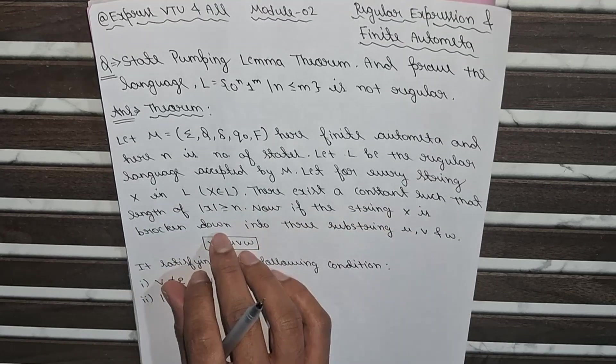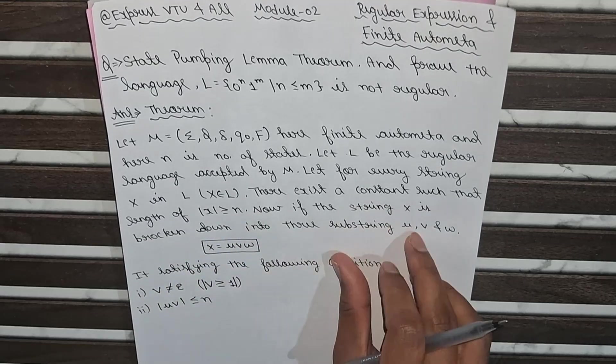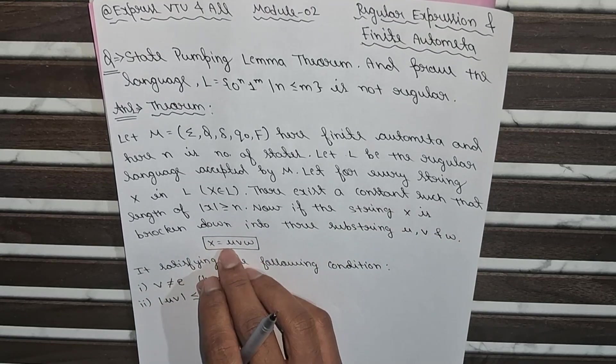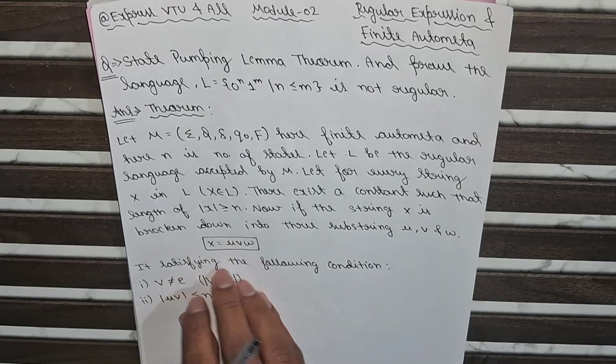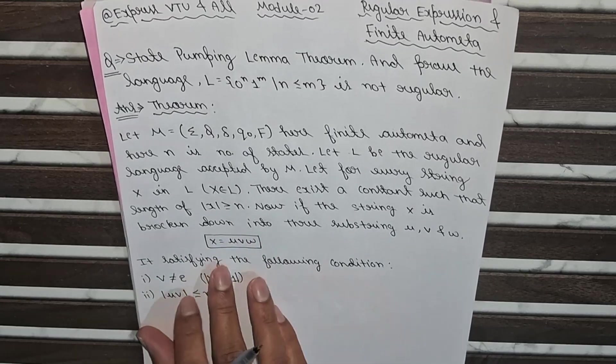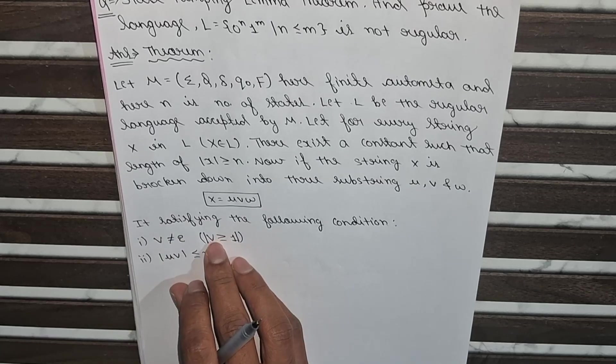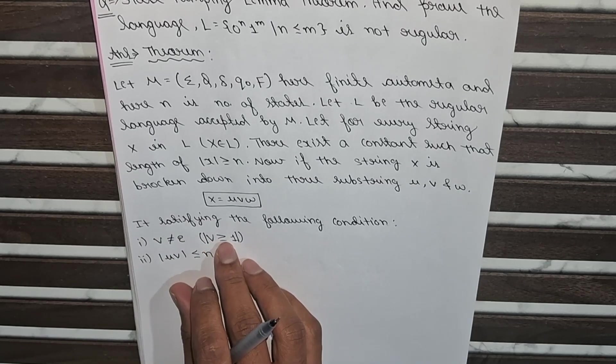Now if the string x is broken down into three substrings u, v, and w, so it's written like x equals u, v, w, it's satisfying the following condition. The condition is v should not be equal to epsilon, which means that v is greater than or equal to one.